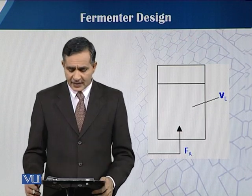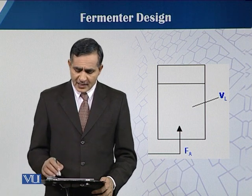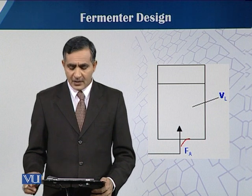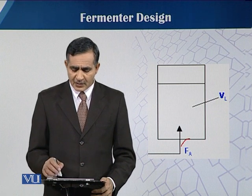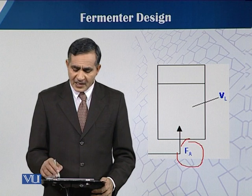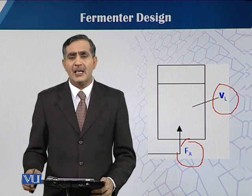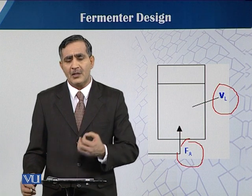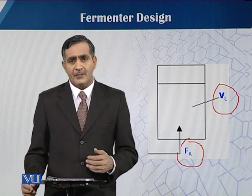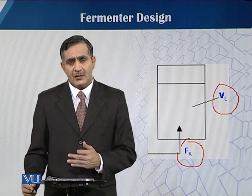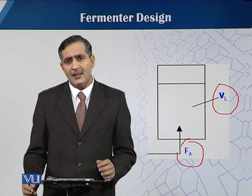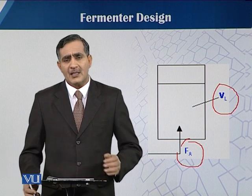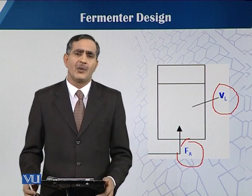In this slide you can see that FA is the flow rate of the air, where A is specified to that. VL means the volume of the liquid fermentation medium. The ratio of FA to VL basically gives the value in terms of VVM. By this term we can easily calculate the flow rate.